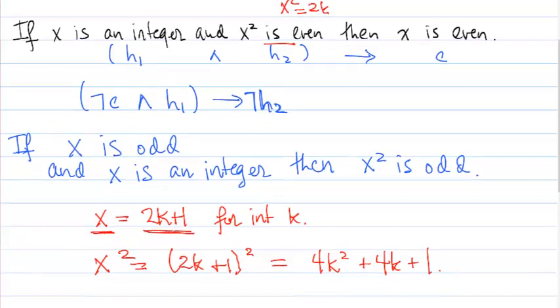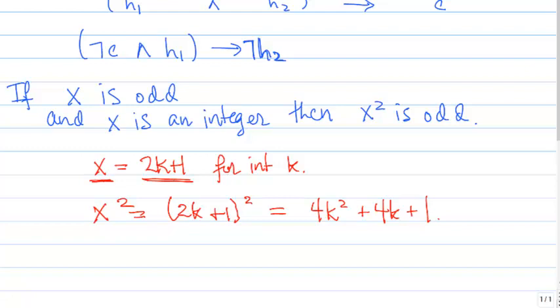2k+1 for some integer k. So I want to take this expression that I have for x² and I want to express it as 2 times an integer plus 1. So here's my plus 1.